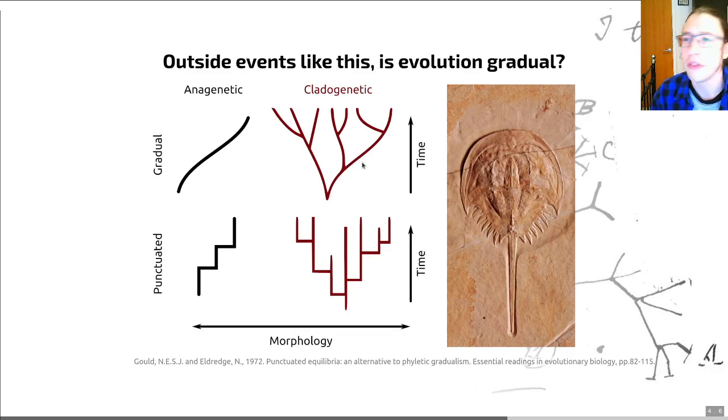We can see that there could be an instance where you have what we would call stasis in a lineage - little change along a lineage but then sudden changes. That could be both anagenic where you have one lineage just changing suddenly without giving birth to lots of species, or you could have it with a cladogenic mode of evolution with lots and lots of splits in our lineages.